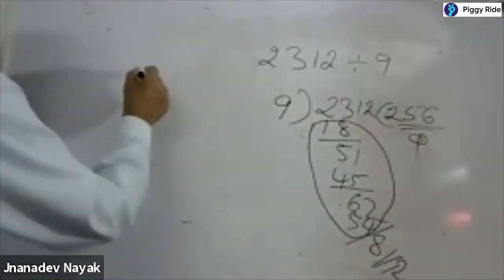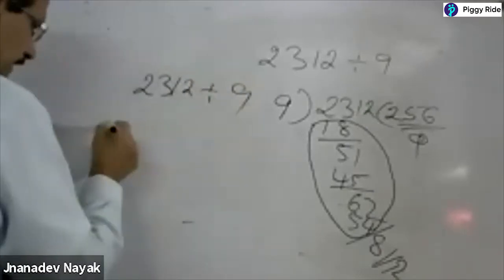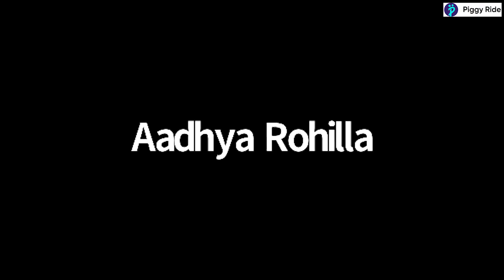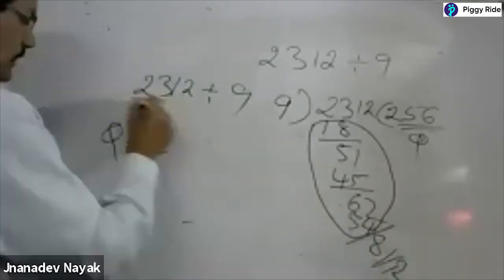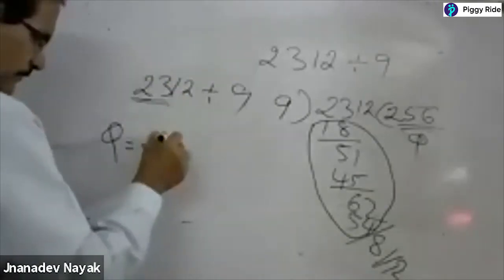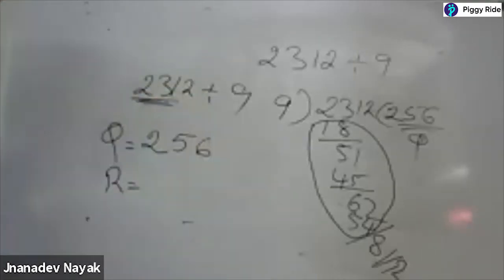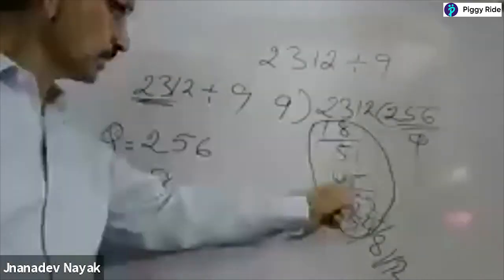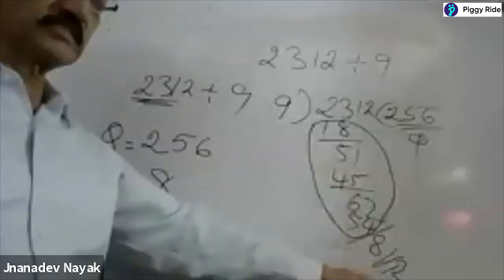I will show you how. Take 2312 divided by 9. For the first digit of the quotient, write the first digit of the dividend as it is. For the second digit, just add these two numbers: 2 plus 3 is 5, 5 plus 1 is 6, 6 plus 2 is 8. In normal math you have to do all these steps — 6 steps. But here you got the answer directly.